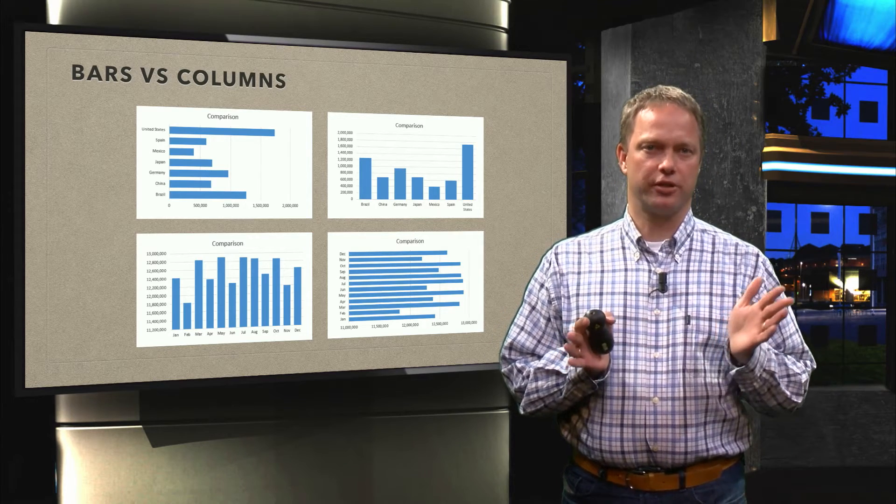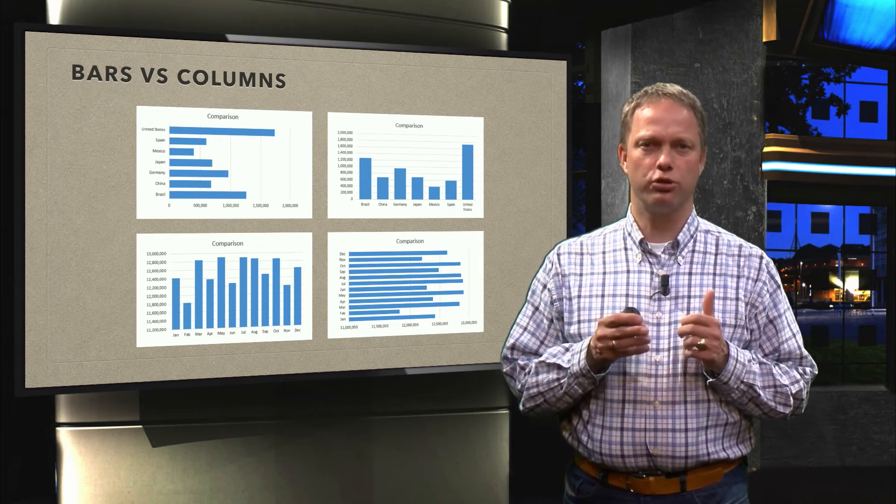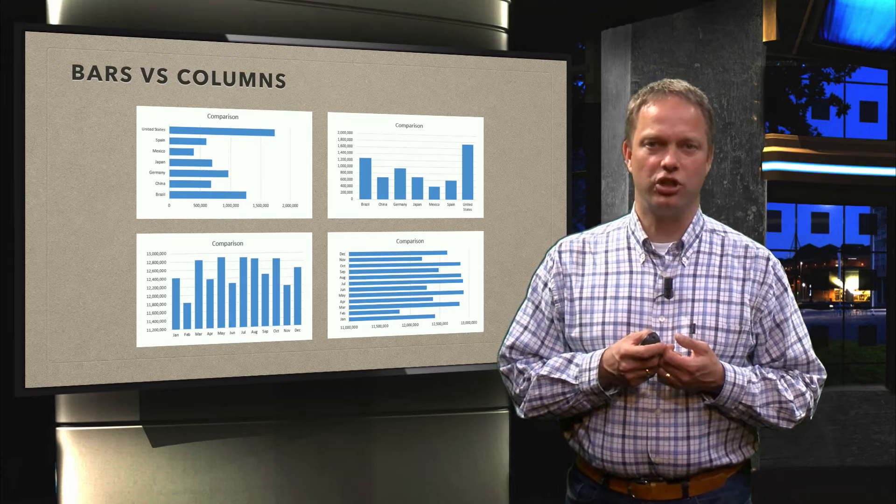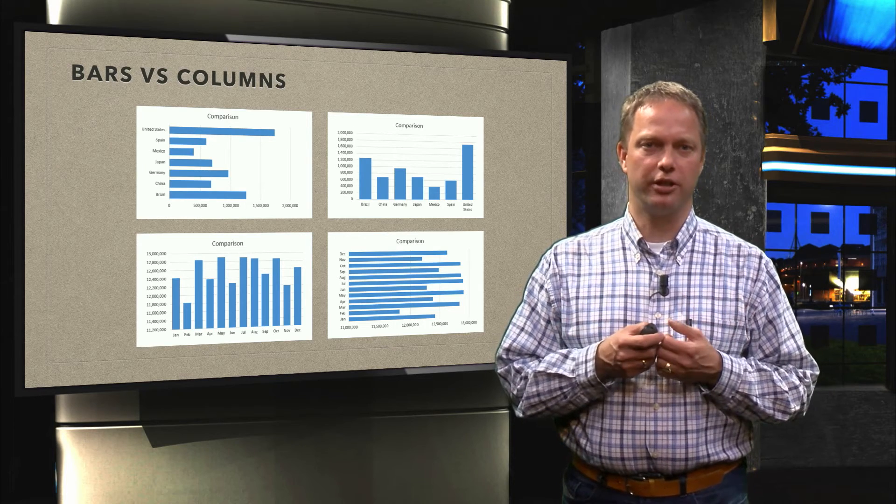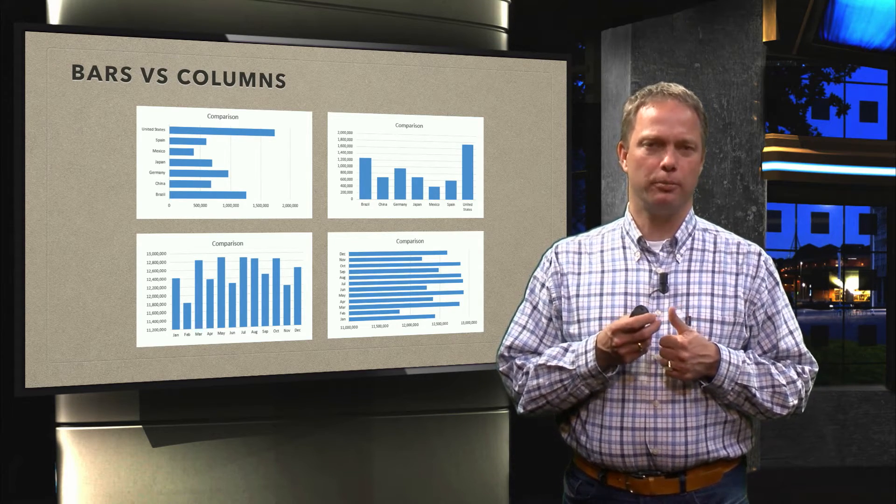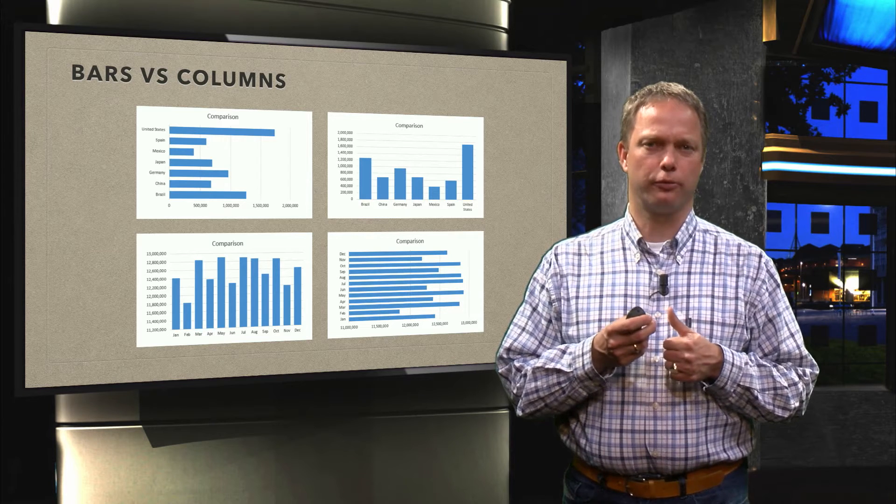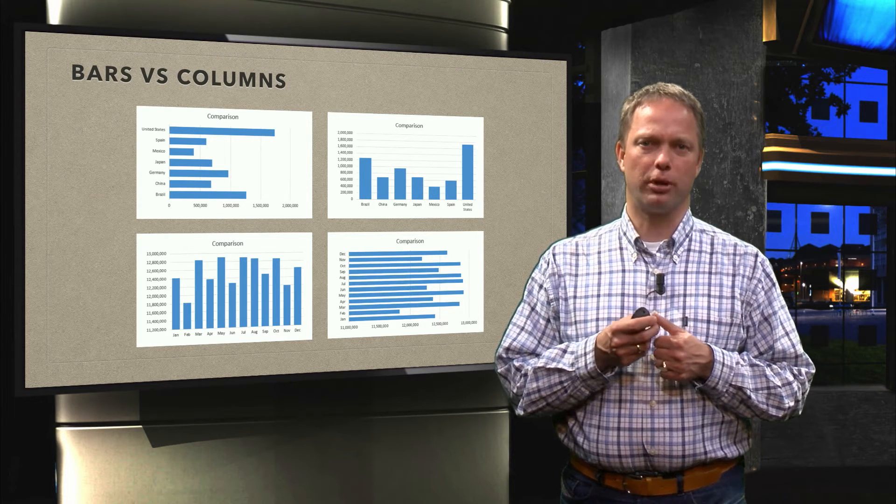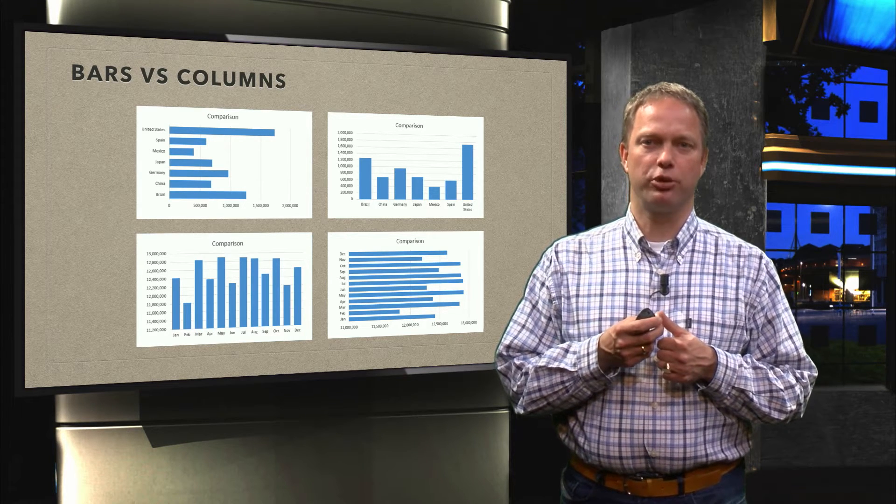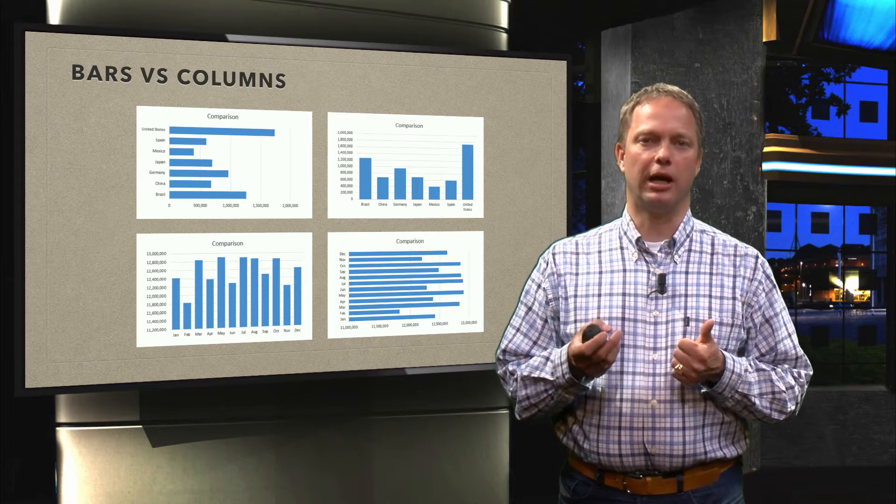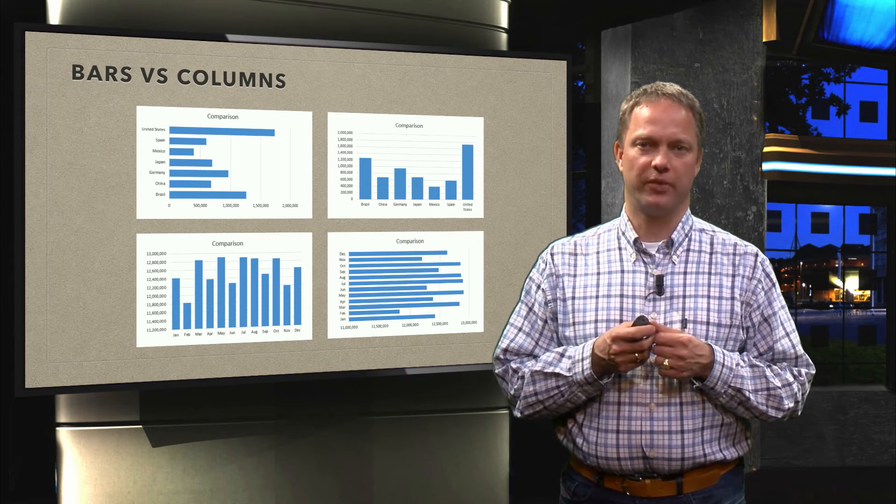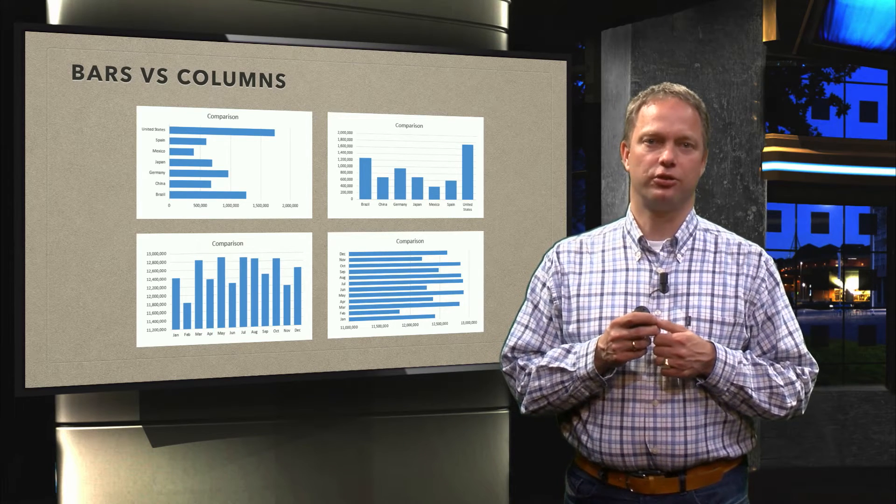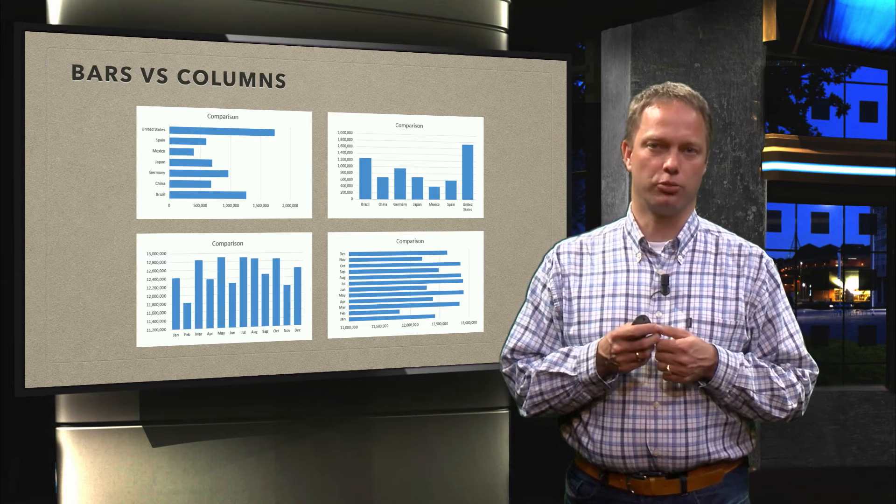One of the basic chart types was the bar or the column graph. Now when should you use a bar and when should you use a column? Actually I do not have a really strong opinion about it, but there are some basic rules. One of the most important aspects are your labels. If you look at the two top graphs, then you see for example United States doesn't fit on one line if you create it in a column graph. So if you have long labels, it makes sense to create a bar graph or a bar chart instead of a column chart.